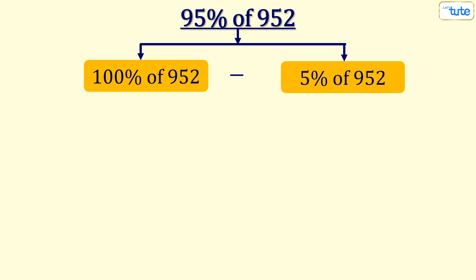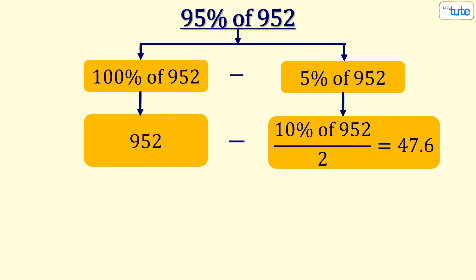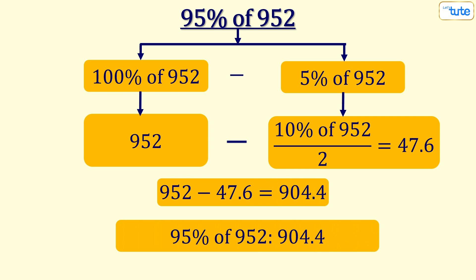Now, we calculate the individual values of 100 percent of 952 and 5 percent of 952 and we will subtract them. Yes, the number obtained by subtraction is the answer of 95 percent of 952.